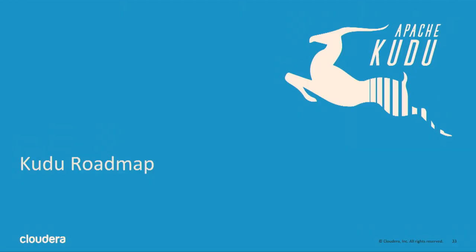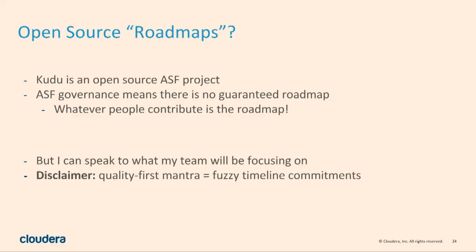In the last section here, I want to talk about our roadmap. But first, a warning: this is an open source project. We don't really publish a roadmap because the roadmap is whatever contributors bring. If people in this room want to bring a new feature, that's now our roadmap. I can speak to what my personal team is going to be working on, with the caveat that these aren't commitments — it's what we hope to do, depending on contributors coming in and helping.